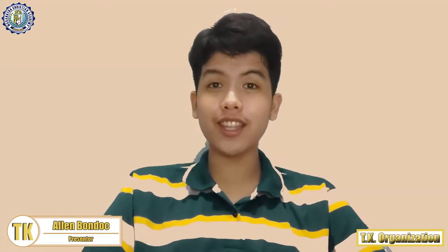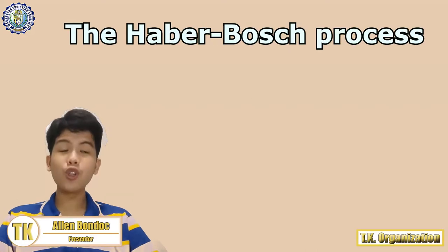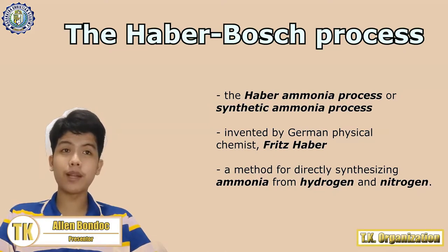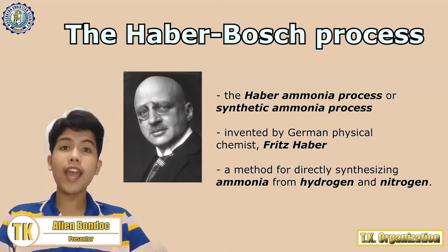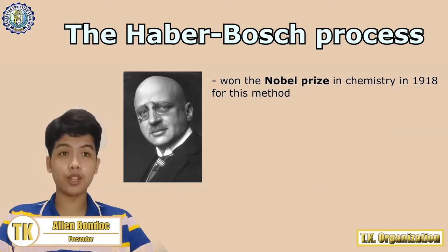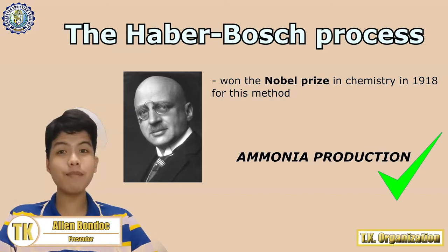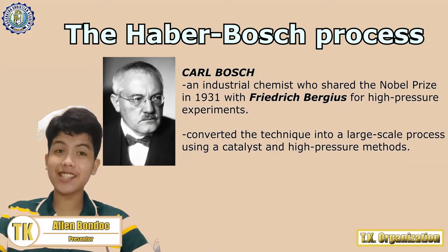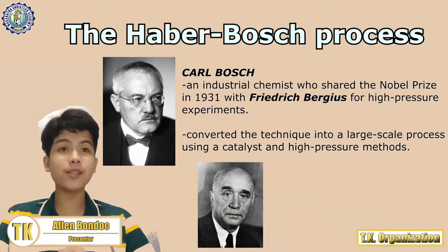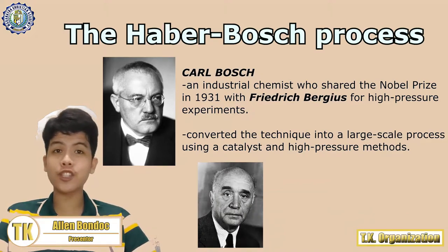The Haber-Bosch process, also known as the Haber ammonia process or synthetic ammonia process, was invented by German physical chemist Fritz Haber, and is a method for directly synthesizing ammonia from hydrogen and nitrogen. He won the Nobel Prize in Chemistry in 1918 for this method, which made ammonia production economically possible. Carl Bosch, an industrial chemist who shared the Nobel Prize in 1931 with Friedrich Bergius for high-pressure experiments, converted the technique into a large-scale process using a catalyst and high-pressure methods.